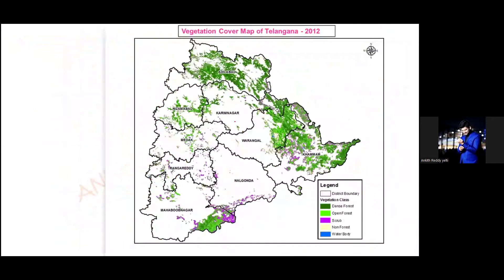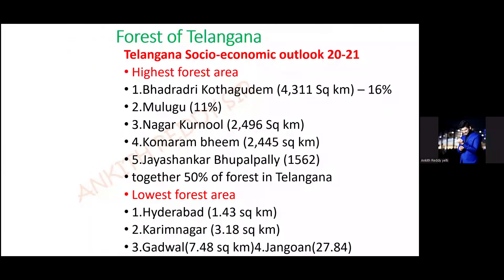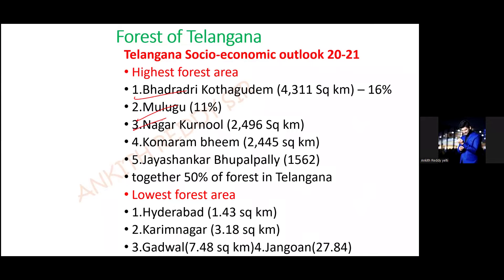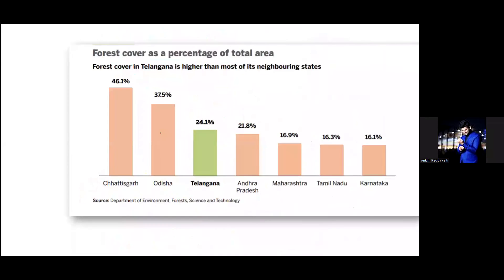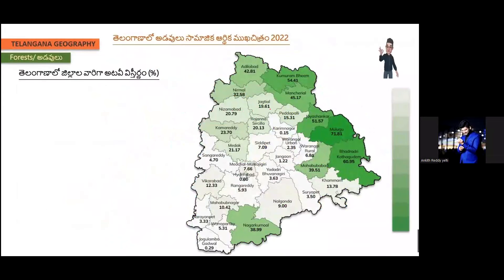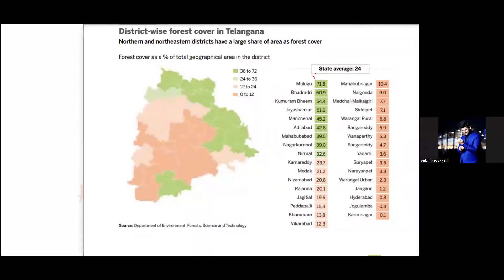We were also discussing about the highest forest area districts: Bhadradri Kothagudem, Mulugu, Nagarkurnool, Kumaram Bheem. When it comes to percentage, it is Mulugu, Bhadradri Kothagudem, Kumaram Bheem, Mahabubnagar, and Jayashankar.